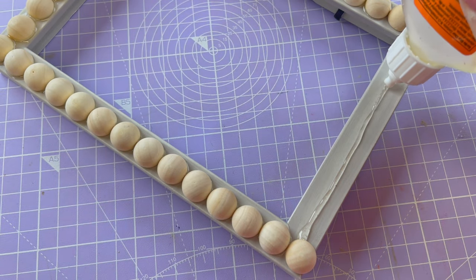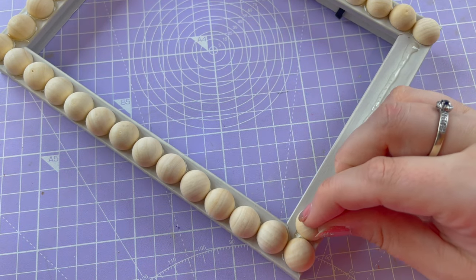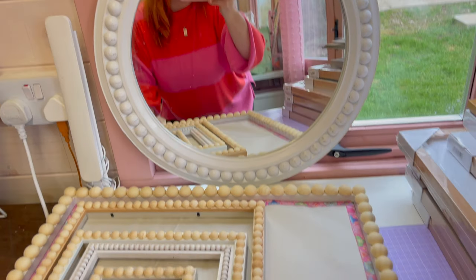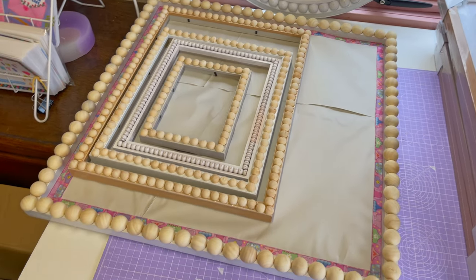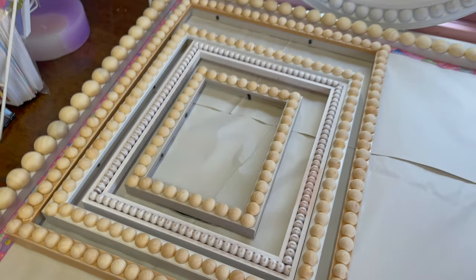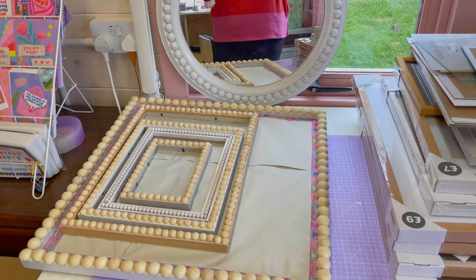Gluing the bobbins onto this smaller frame only took about five to ten minutes, so really good and I'm leaving that to dry overnight. It's now the next morning and this is what my set of bobbin frames are looking like. I'm really excited, so let's paint them.